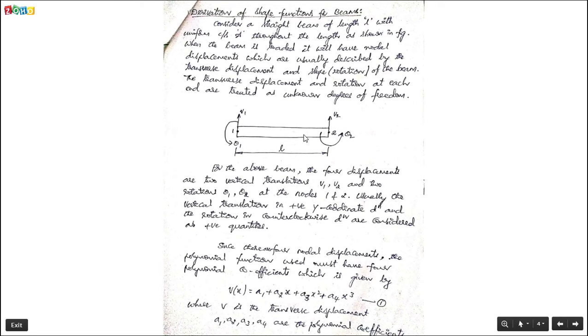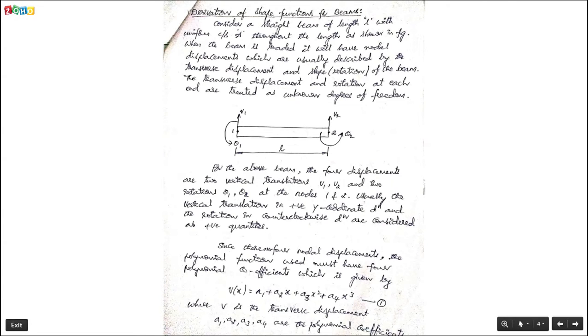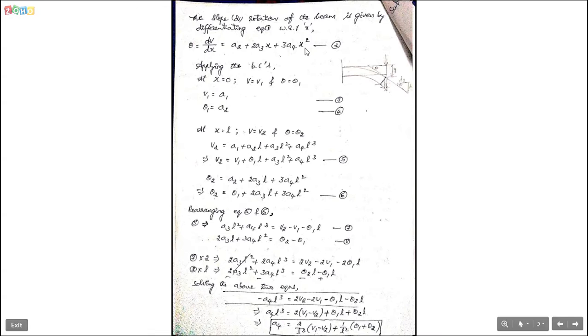The transverse displacement V(x) = A1 + A2·x + A3·x² + A4·x³, where V is the transverse displacement and A1, A2, A3, A4 are the polynomial coefficients. When we differentiate this transverse displacement V with respect to x, we get the slope value: θ = dV/dx = A2 + 2A3·x + 3A4·x².